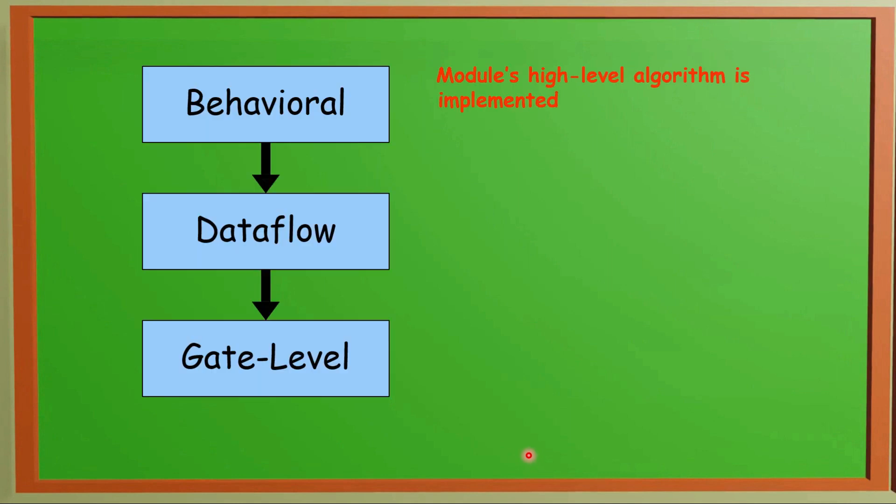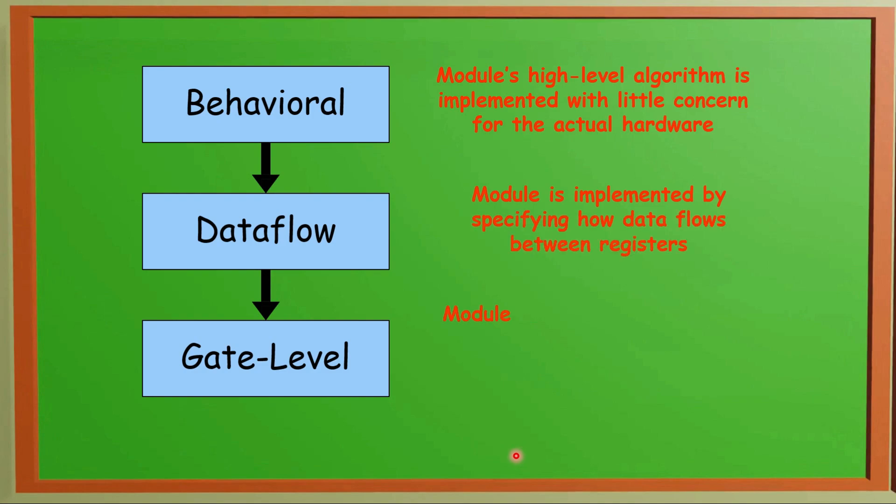When we design a system, we may need all three types of modeling styles together. Normally designers use a combination of all three: Behavioral, Data Flow, and Gate Level. In Behavioral modules, high-level algorithm is implemented with little concern for the actual hardware. In Data Flow, the module is implemented by specifying how data flows between registers.